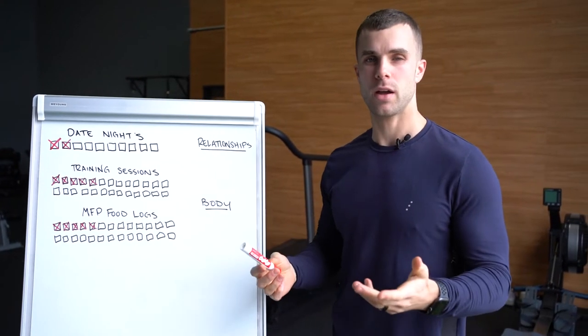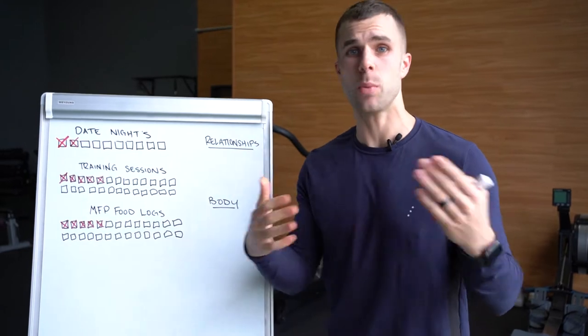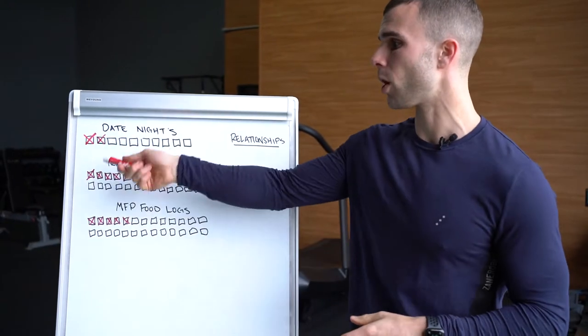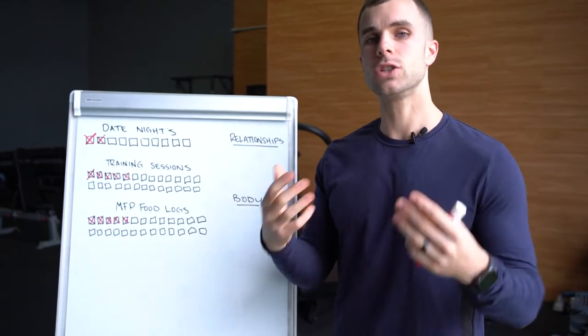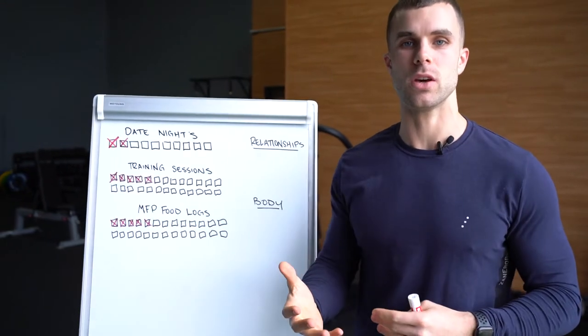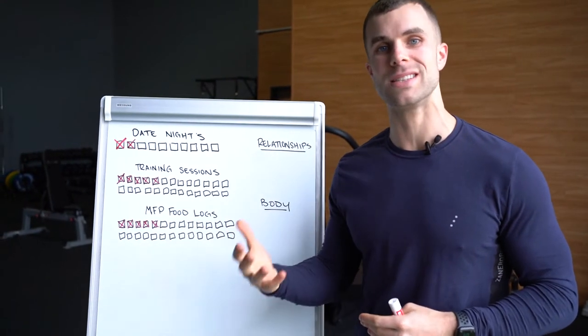And that's where this comes into play, a habit tracker. It's a very simple way to use dopamine to your advantage. Every time I mark a red X on a habit, I get a dopamine response. I get a happy feeling that I did something good, and I want that again, that reward sensation.